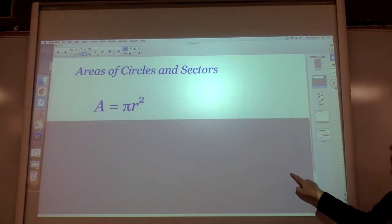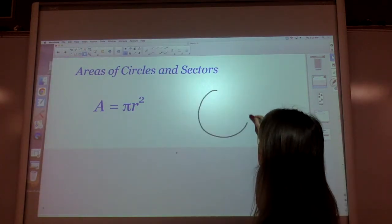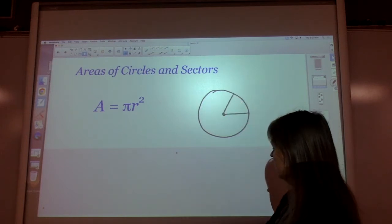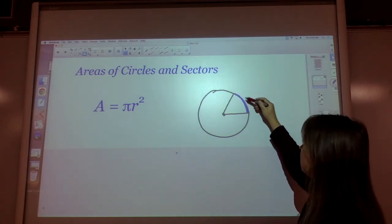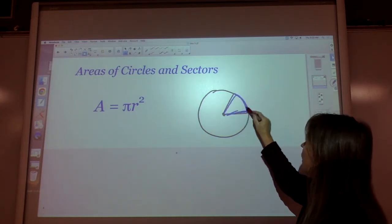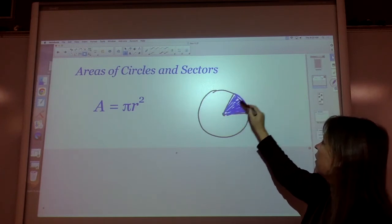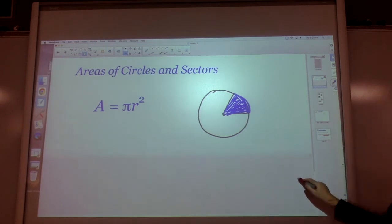Area of a circle reminder is πr². A sector, which is actually a piece of a circle, we already did arc length. Arc length was just the crust. The sector is the whole entire piece of pie, not just the crust. We're eating the whole piece.